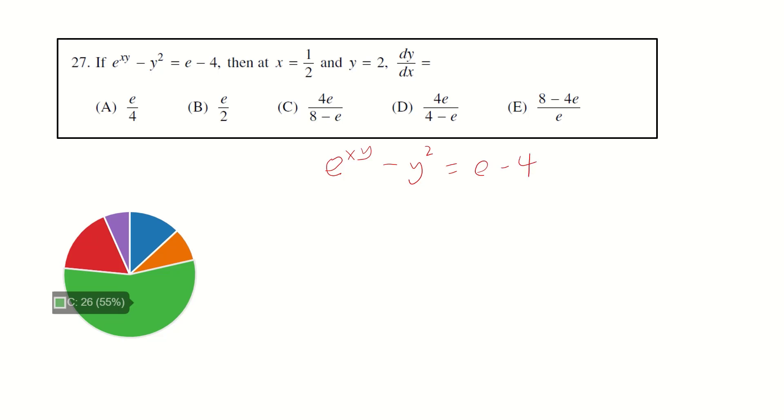We took the derivative of each term with respect to x. So for e to the xy, we get e to the xy times x dy/dx plus y, minus 2y dy/dx. And for the right hand side, e minus 4 is a constant. After you take the derivative, it should be equal to 0. Now our focus is to get dy/dx at this particular point.